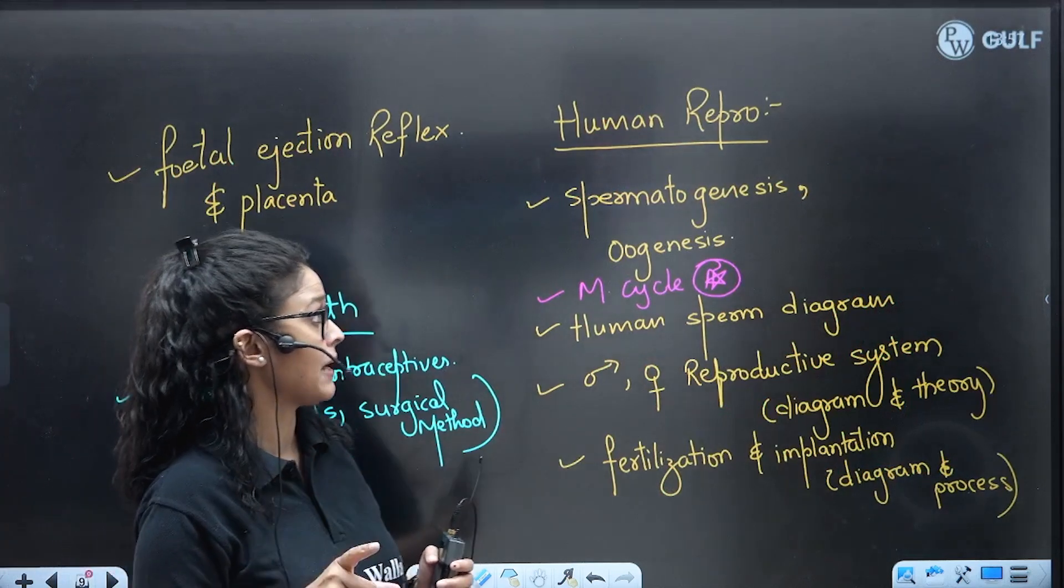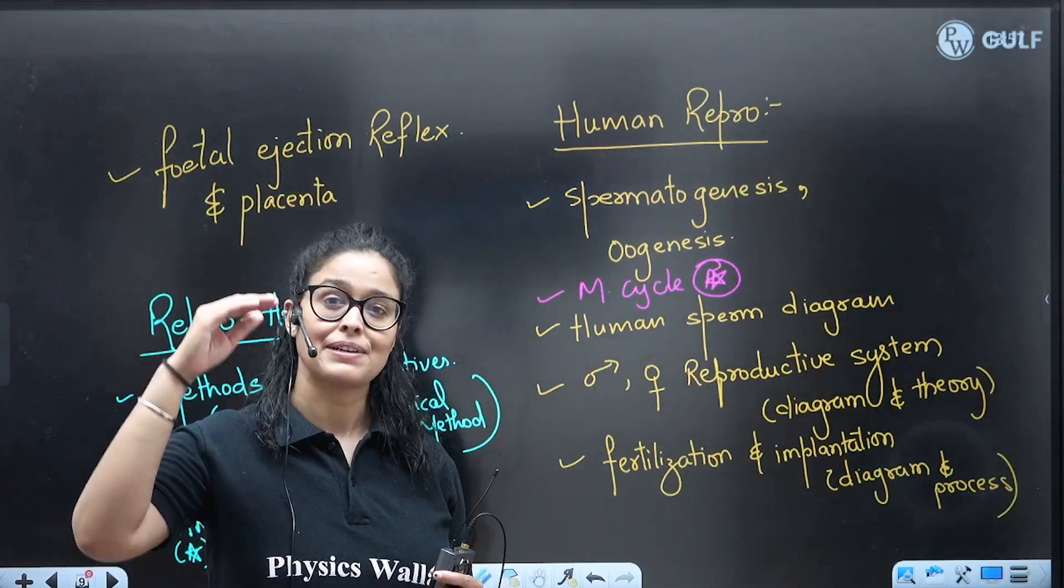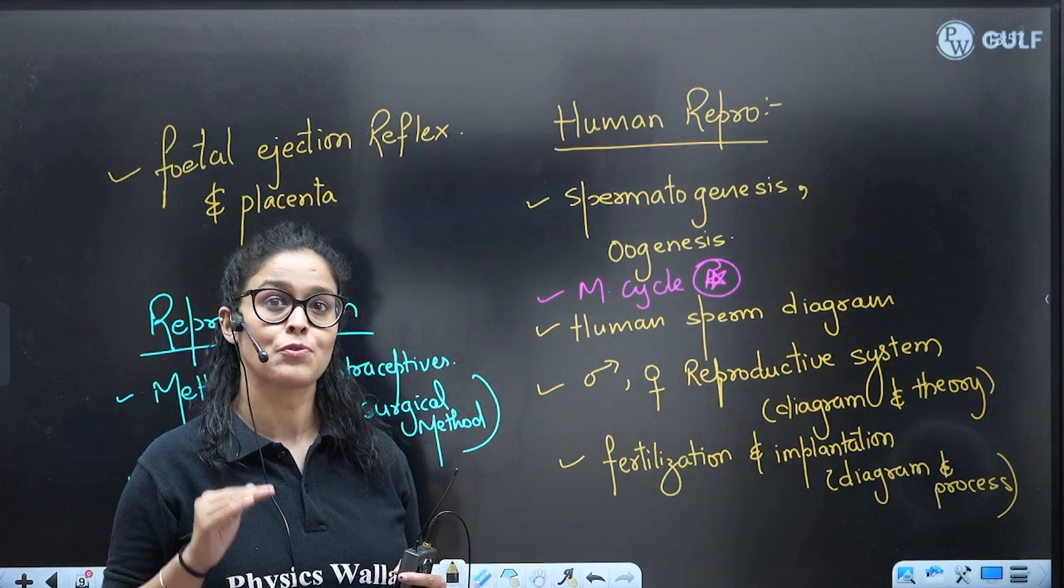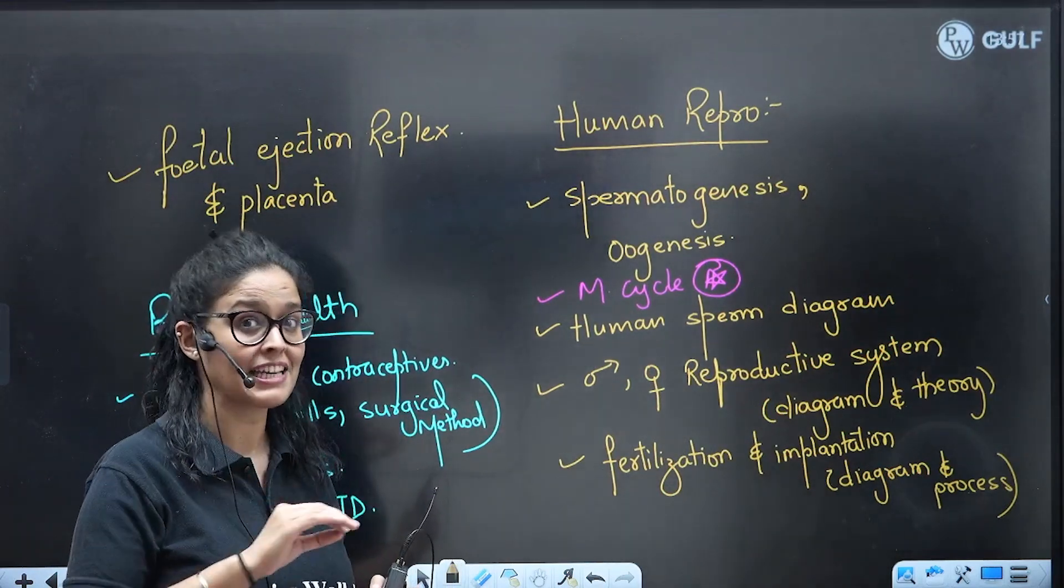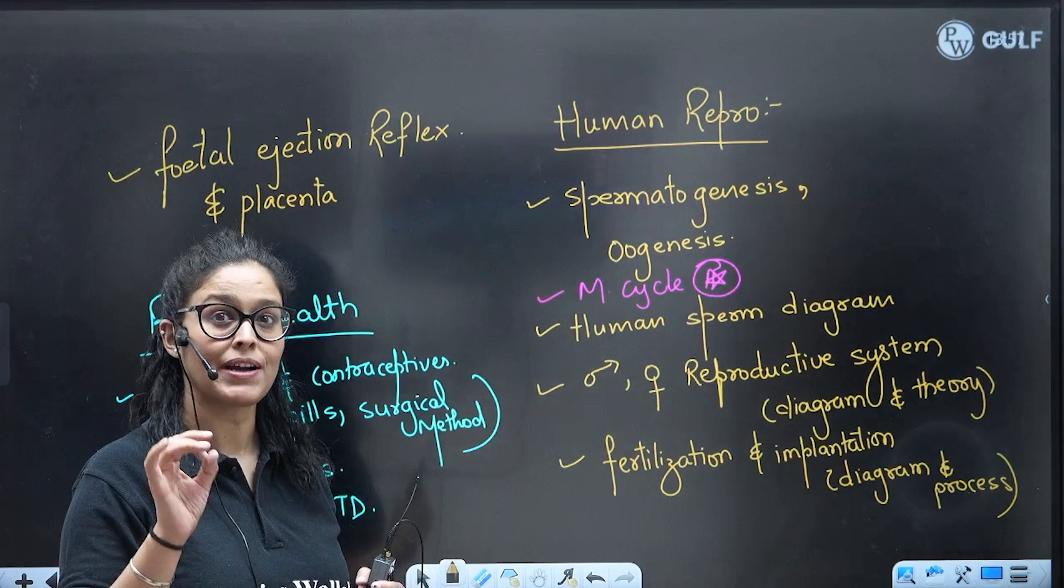Human Reproduction: spermatogenesis, oogenesis - they might ask you to write down all these steps, full steps, or some concept-based questions from these topics. Menstrual cycle - you'll find every year questions from this topic.